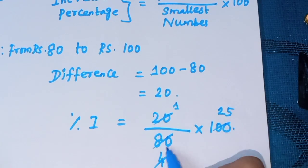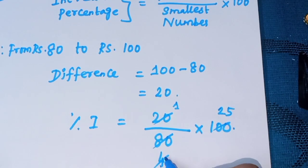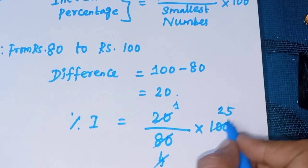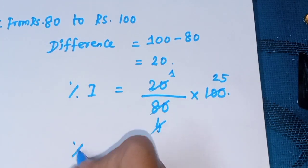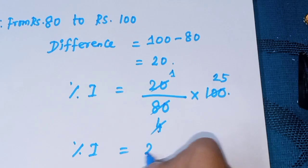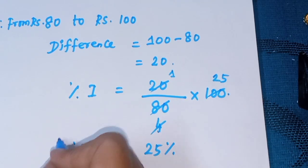1 into 20 is 20, 4 into 20 is 80. 1 fourth of 4, 25 fourth of 100. The percentage increase equals 25%.